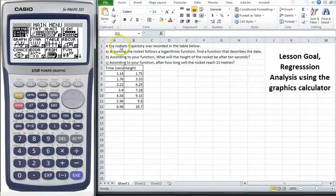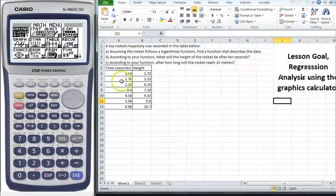A toy rocket's trajectory was recorded in the table below, and you can see the rocket's trajectory here. Time in seconds and the height, so it launches and after 1.14 seconds its height is 1.75, and so on and so forth, so we're given a table.